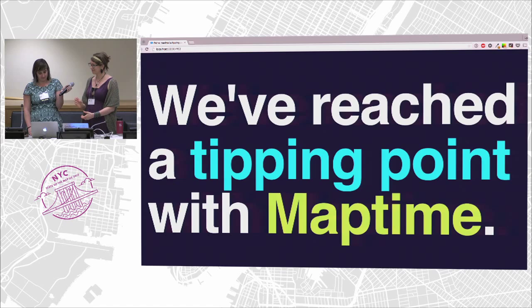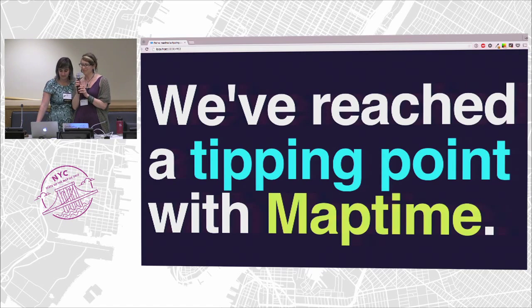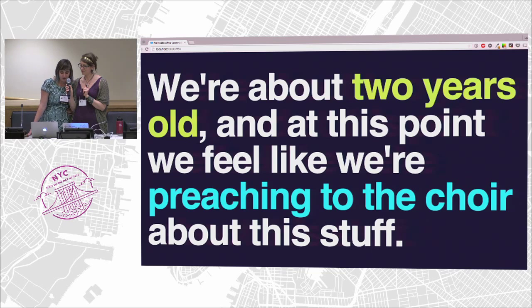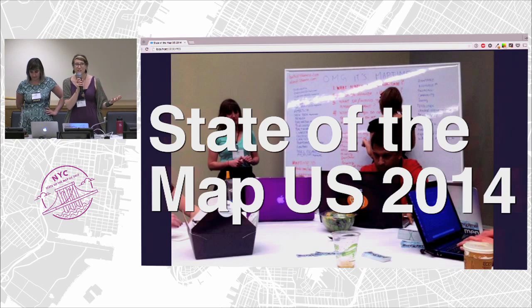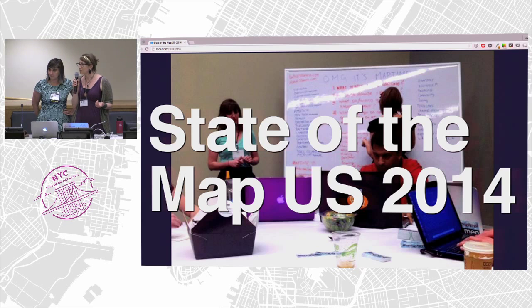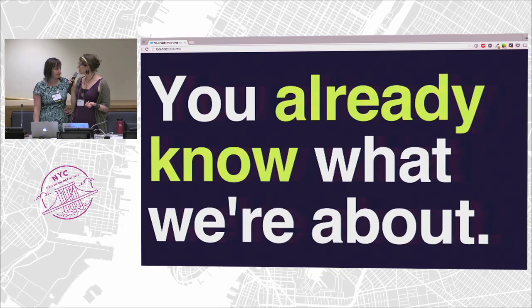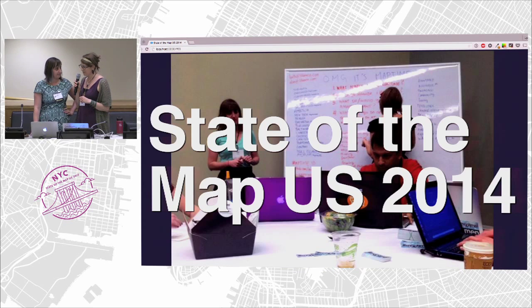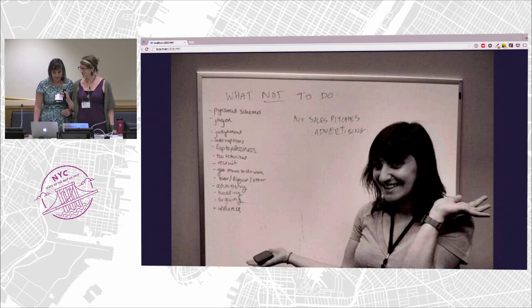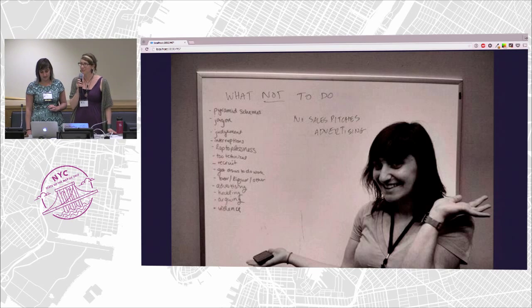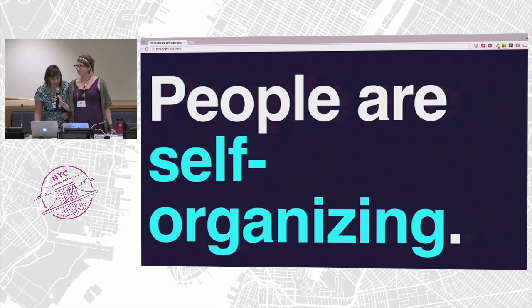We've reached the tipping point of MapTime. We're about two years old, and at this point we feel like we're preaching to the choir. This is us at State of the Map U.S. — it was our first ever Birds of a Feather, a meeting where we actually worked with the community to define what we are. You already know what we're about. You would also probably have a pretty good idea of what not to do at MapTime — like selling, or making people feel bad, or using big words to make yourself feel smart. And people are self-organizing around this idea.